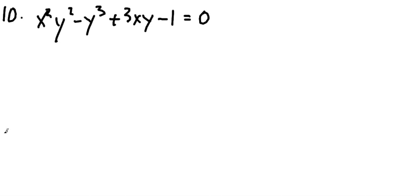The inside function is y, the outside function is whatever the function of y is. So you can take the derivative of the function as normal, except you have to multiply by the derivative of the inside function, which is y — so therefore you have to multiply by y prime.